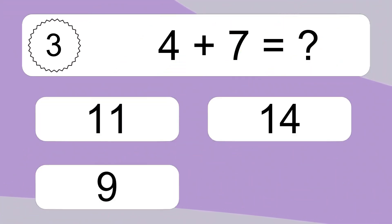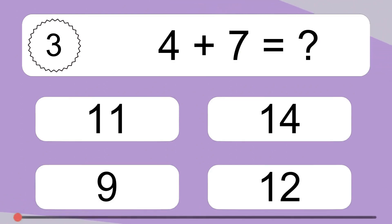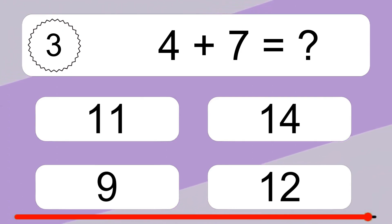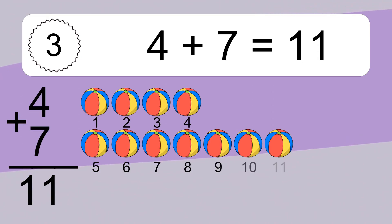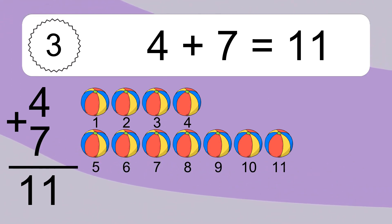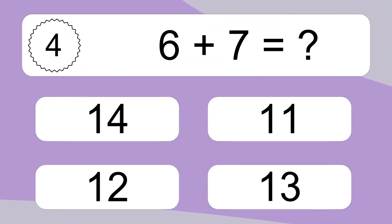4 plus 7 equals what? Let's count it. 1, 2, 3, 4, 5, 6, 7, 8, 9, 10, 11. 6 plus 7 equals what?